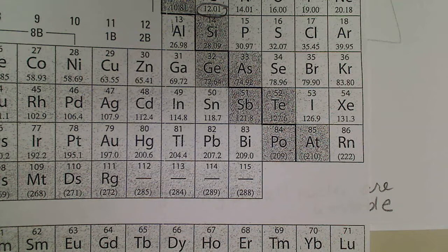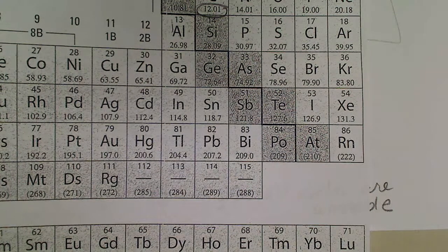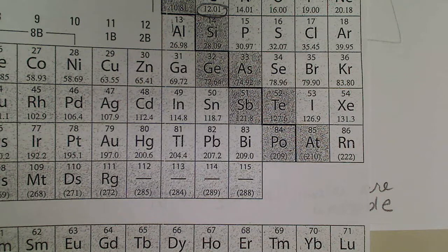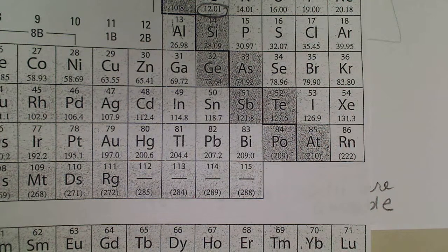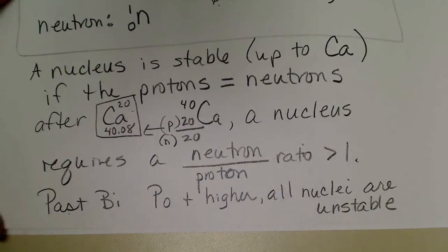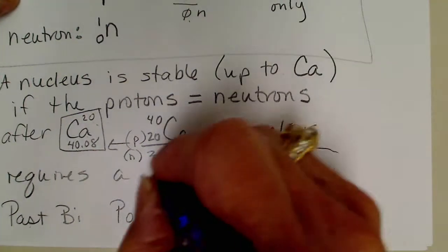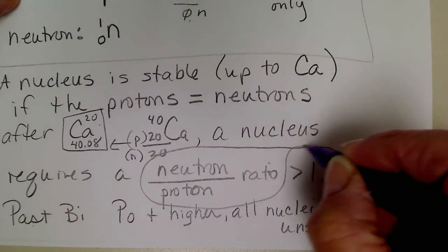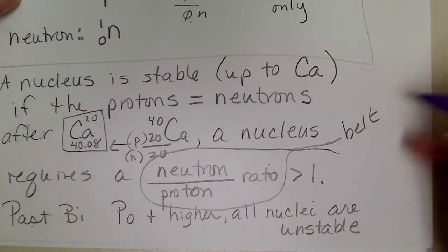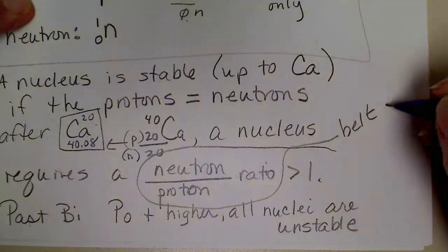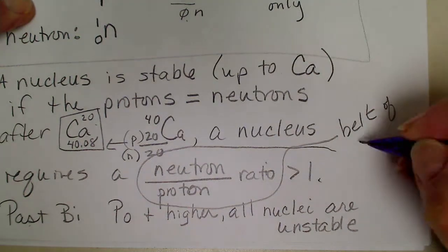And so everything from polonium on undergoes nuclear decay. So we have something called the belt of stability, and I'm just going to write that on there - the belt of stability.